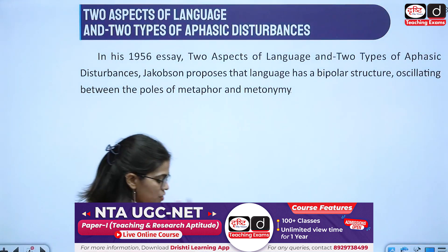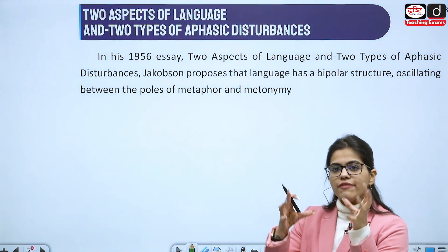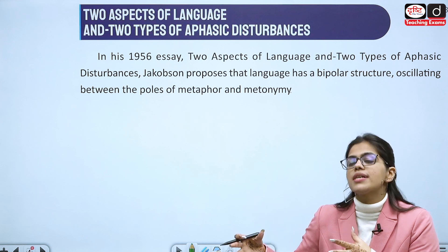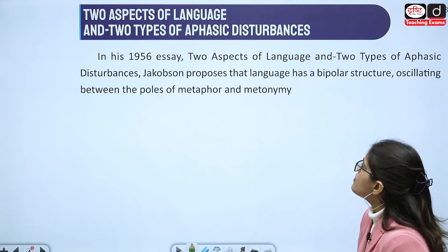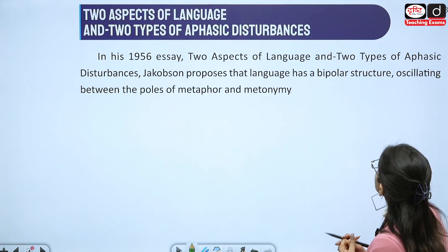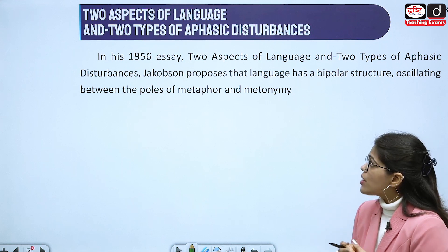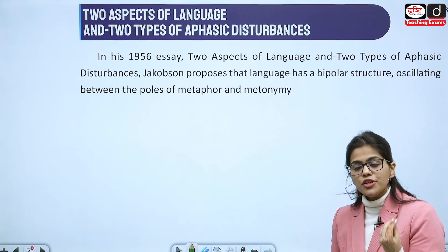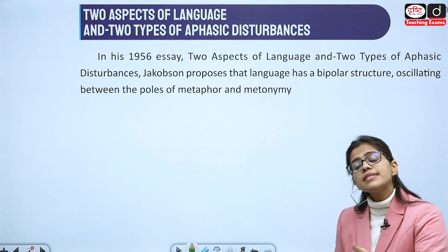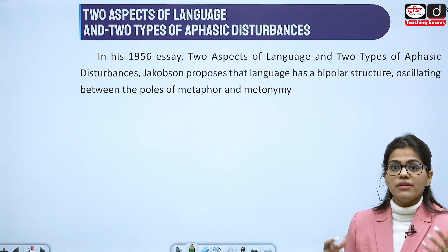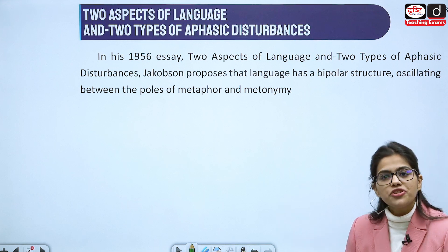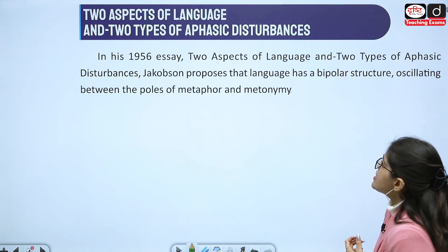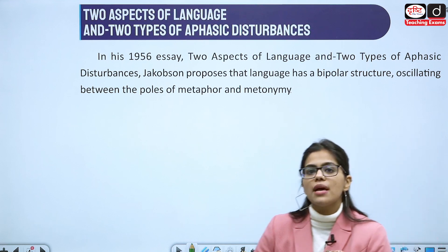In the previous video I talked about the basic things about Roman Jakobson — you can refer to that video. In this video we are going to talk about his essay 'Two Aspects of Language and Two Types of Aphasic Disturbances,' which came out in 1956. He was influenced by Ferdinand de Saussure and he influenced many great theorists. Let us start by discussing metaphor and metonymy, two concepts that he talked about.